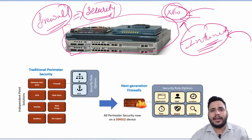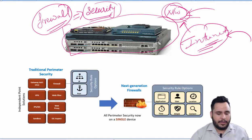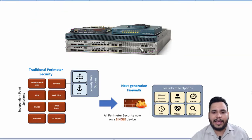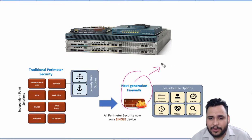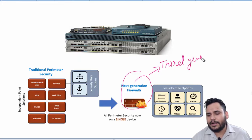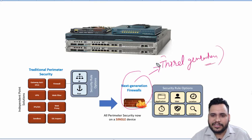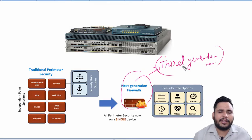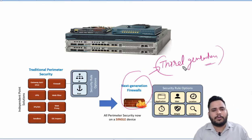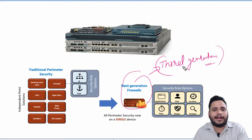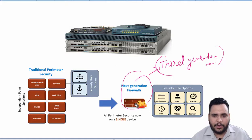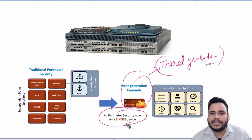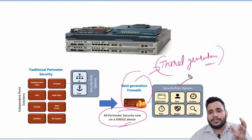In the current version of CCNA, you need to know about both basic firewalls and next-generation firewalls. Next-generation firewalls are the third generation of firewalls. In traditional perimeter security, we used gateway antivirus, normal firewalls, VPNs, web proxies, sandbox, and SSL inspection — each one separately. But in next-generation firewalls, all perimeter security is combined into a single device with security rules.